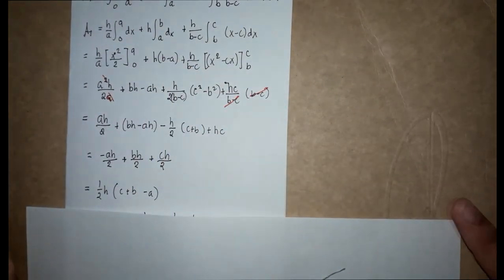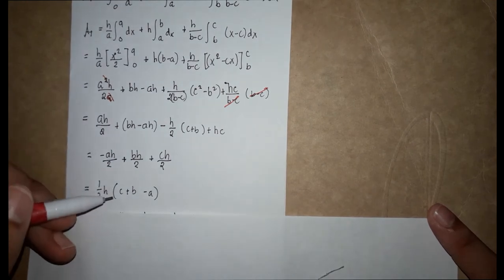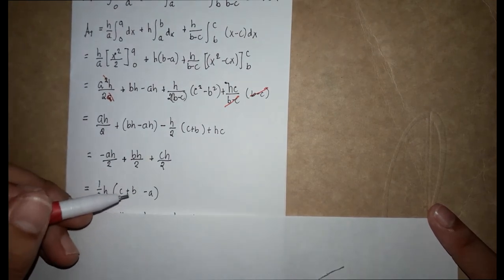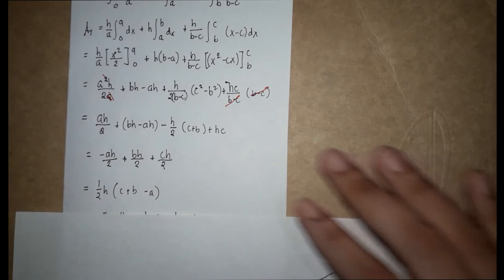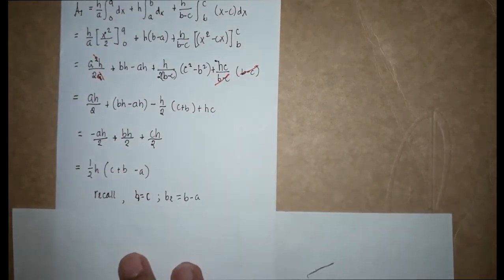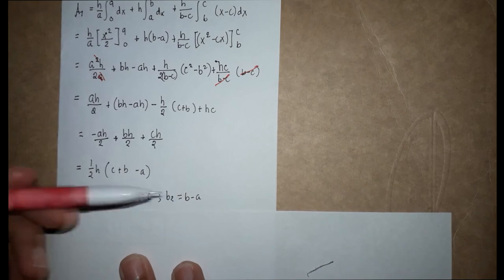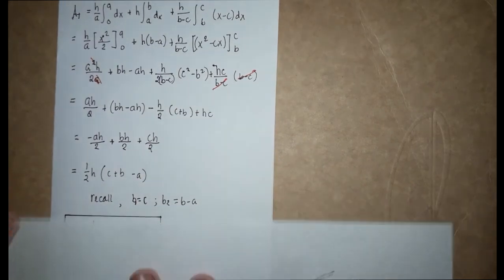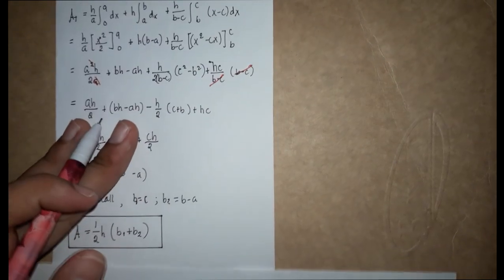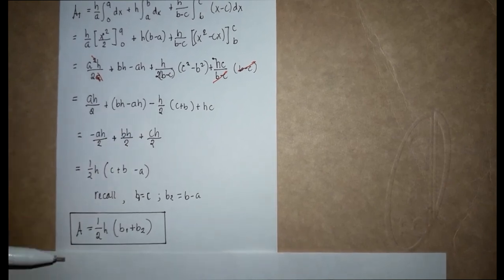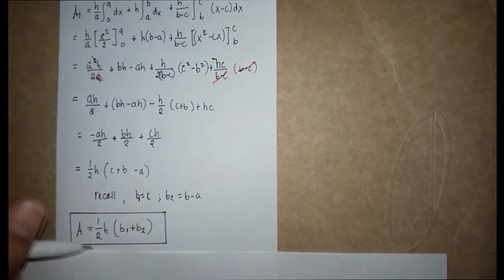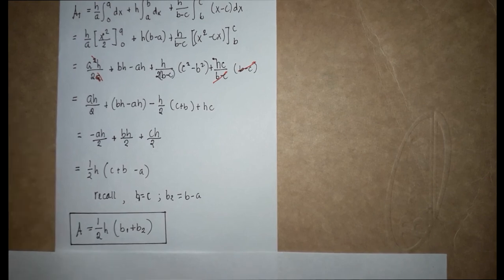This simplifies to negative ah over 2 plus bh over 2 plus ch over 2. We factor out one half h to get one half h times (c plus b minus a). Recalling that b1 equals c and b2 equals b minus a, therefore the formula for the area of a trapezoid is A equals one half h times (b1 plus b2). That's all, thanks for listening!